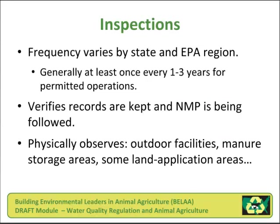Inspections. Frequency of inspections on animal feeding operations varies by state and EPA region. Generally speaking, a permitted animal feeding operation will be inspected at least once every one to three years. The purpose of the inspection is to verify that records are kept and the nutrient management plan is being followed. Physical observations during an inspection may include examination of outdoor facilities that handle manure or wastewater, manure storage areas, and possibly some of the land application areas where manure is applied as fertilizer.